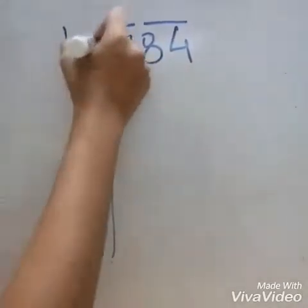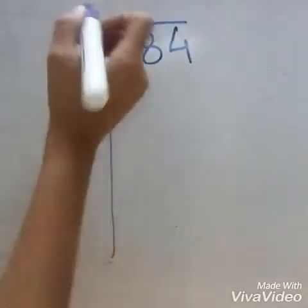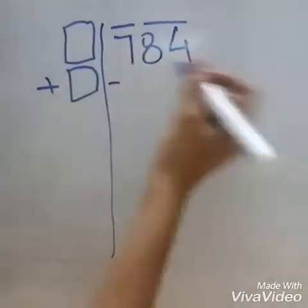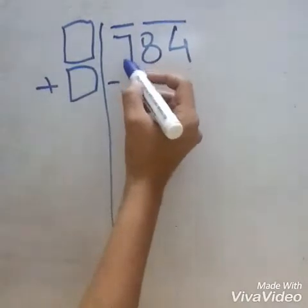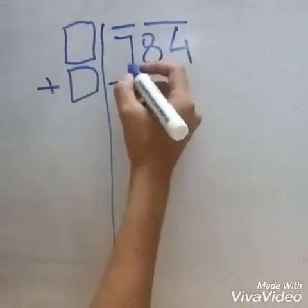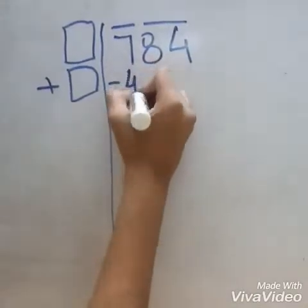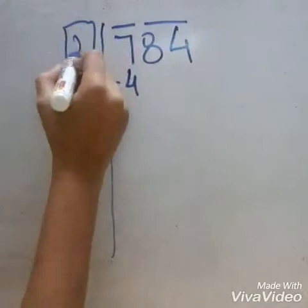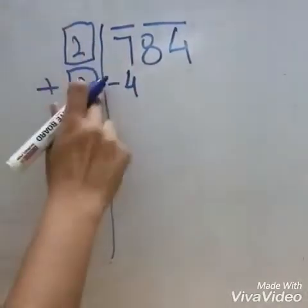First, we will put two boxes here and a plus sign and a minus sign over here. Now we have to find a perfect square just before 7. The perfect square just before 7 is 4, and the square root of 4 is 2. So we will write 2 in these boxes.